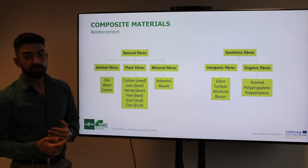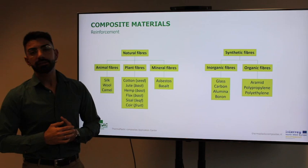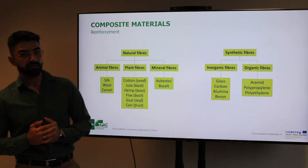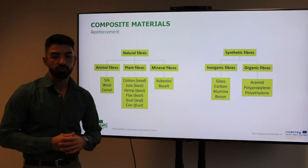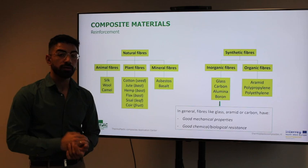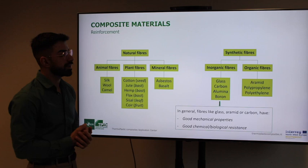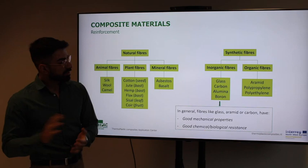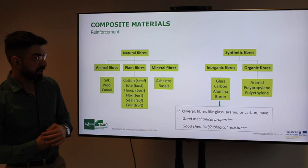Moving to synthetic fibers, they can be subdivided into inorganic fibers and organic fibers. Inorganic fibers are most typical and used mostly in aerospace and automotive industries — these include glass fiber, carbon fibers, boron fibers, and alumina fibers. These have really good mechanical properties and good chemical and biological resistance. Organic fibers come from polymers and include polypropylene fibers, aramid fibers, and polyethylene fibers.